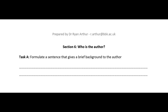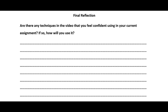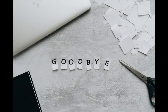Please refer to the Critical Thinking 2 task sheet, go to section 6: who is the author? Task A asks you to formulate a sentence that gives a brief background to an author of your choice. It is always good to end with a reflection. The last section in your task sheet asks you to reflect on any techniques in the video that you feel confident using in your current assignment and how you will use them. Thank you for listening to this video. I hope you have enjoyed our journey. I look forward to meeting you in our live discussion where we can discuss the topics raised in this video and your responses to the task sheet.